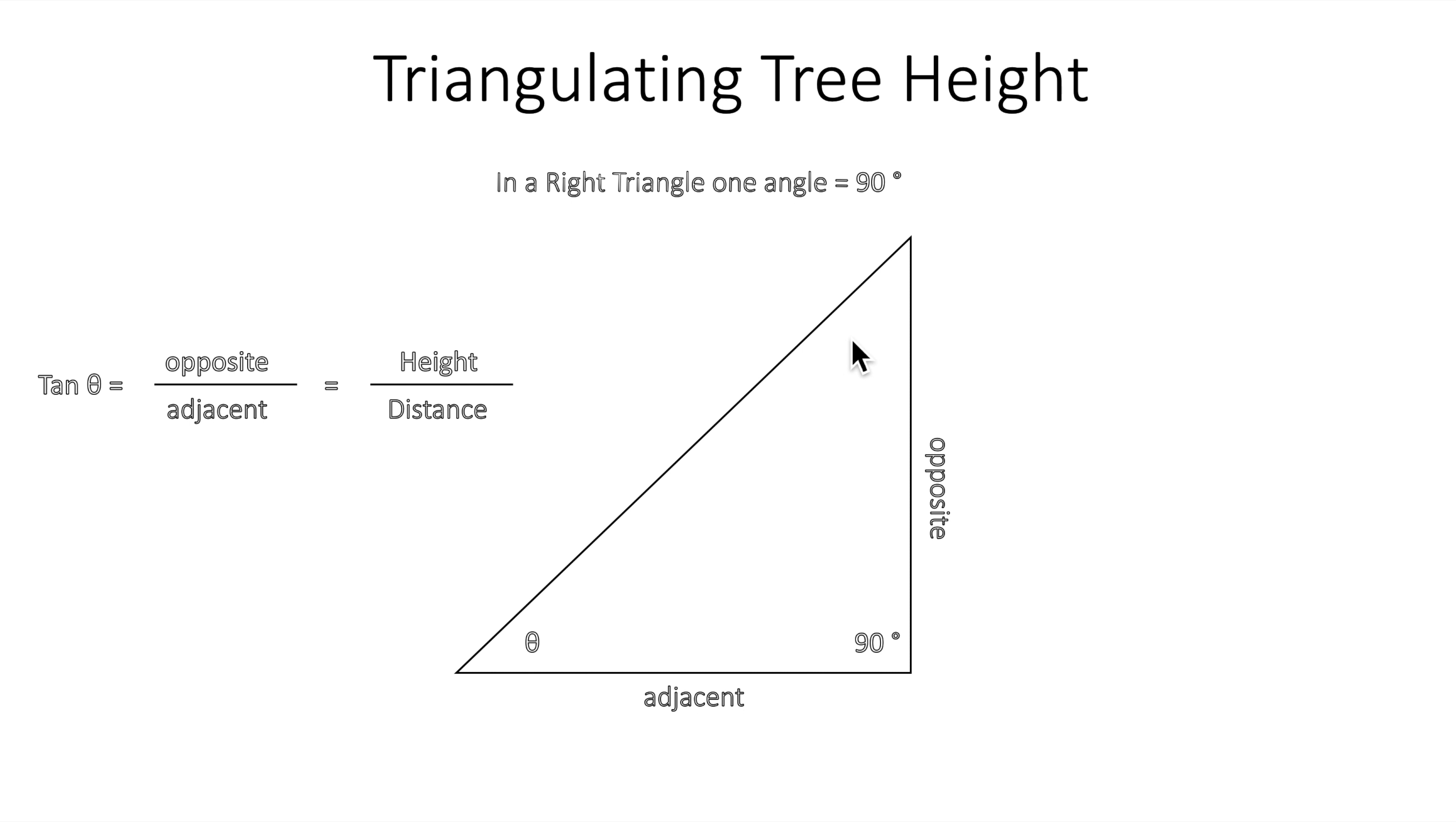The other two angles could be equal if it's an isosceles triangle where opposite equals adjacent. Most of the time, we're not going to have that in this situation. The tangent of that angle is equal to the ratio of the opposite to the adjacent lengths. For a tree, they're talking about the height over the distance to the tree.